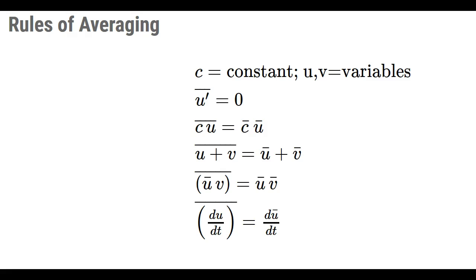The rules are pretty simple. First, the average of a perturbed or turbulent term is zero, because if it were not, then the average value would be incorrect. Second, the average of the product of a constant times a variable is just the product of the average of the constant times the average of the variable.